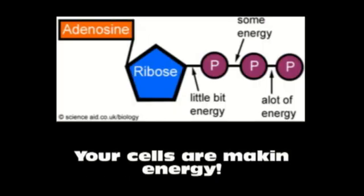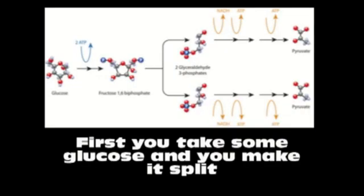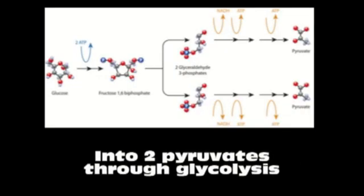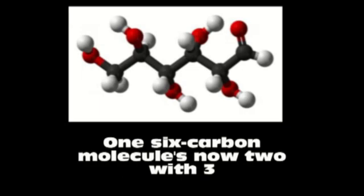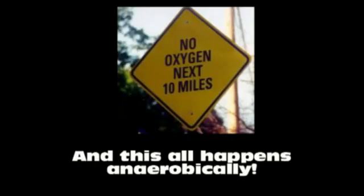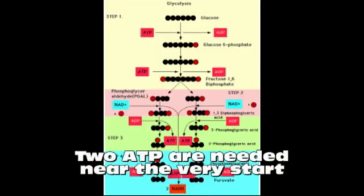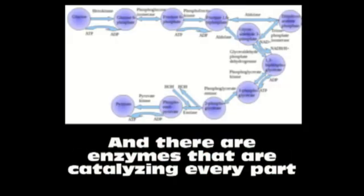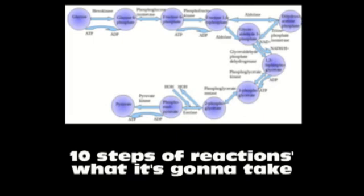Your cells are making energy — respiration, baby! First you take some glucose and you make it split into two pyruvates through glycolysis. One six-carbon molecule is now two with three, and this all happens anaerobically. Two ATP are needed at the very start, and there are enzymes that are catalyzed in every part.